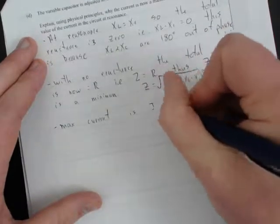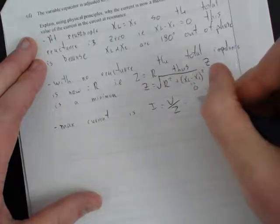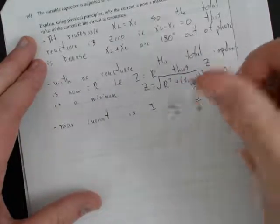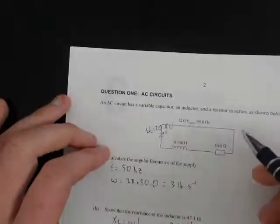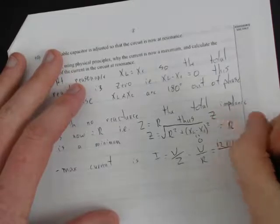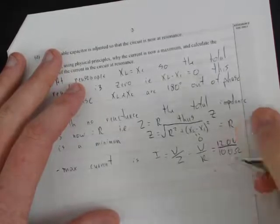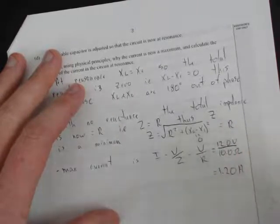Max current I equals V over the impedance, which is also equal to V over resistance because the impedance equals the resistance now. This equals 12.0 volts divided by 10.0 ohms, keeping everything in 3SF, equals 1.20 amps, 3SF as well.